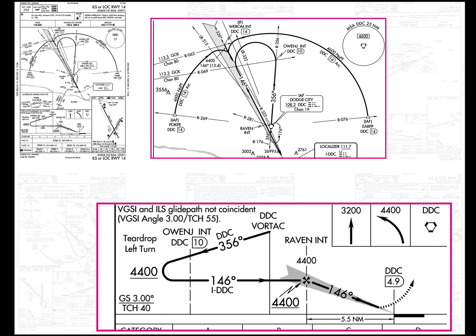Let's look at a couple more without the FMS and drill into the profiles. At Dodge City, you go out to ONJ, teardrop left turn, then turn inbound. It seems to imply you need to stay within the DME arc — because how big can that lobe be between ONJ and the intercept?